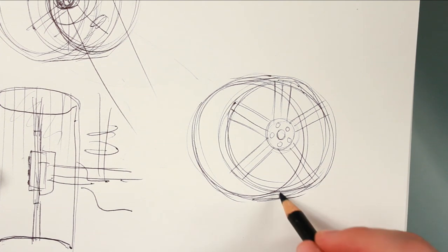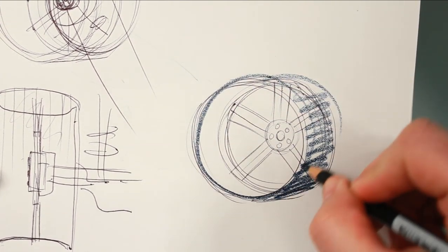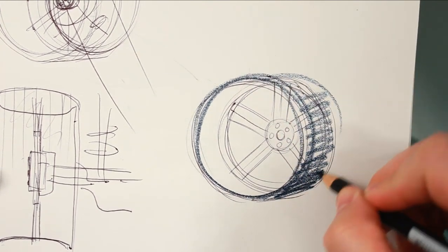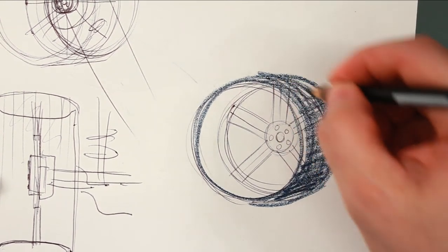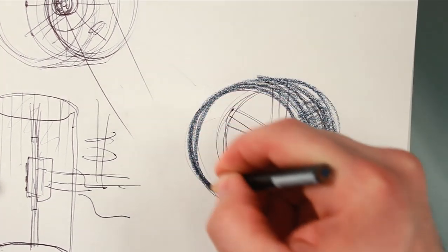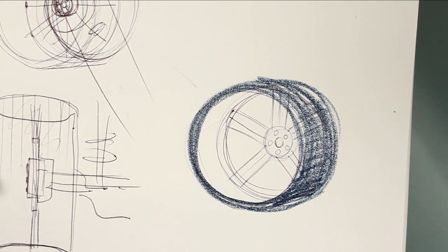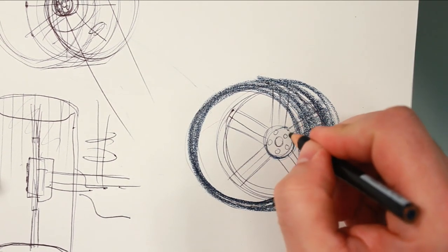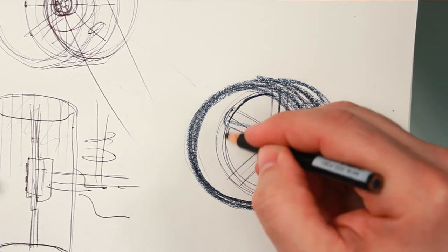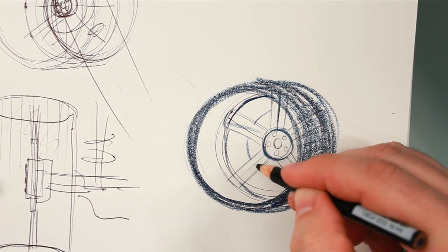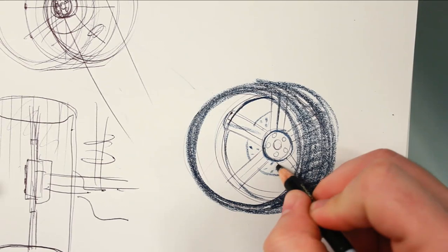And then we'll go ahead and bring in just for ease of the video so you can see. If we shade that in like this, then you can start to see it. So we've got our middle circle part, five point star, back of the rim, and then behind these five points, we're going to add the disc, the breaks.